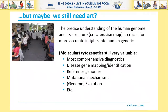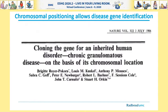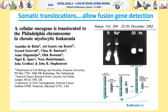Molecular cytogenetics is still extremely valuable to get the most comprehensive diagnostics. It can also assist in disease gene identification, is important for complete reference genomes, and helps us understand mutation mechanisms or gives insights into evolution. The earliest gene identification studies made use of cytogenetic techniques — for example, germline mutations that cause CGD, or somatic cytogenetic aberrations like the identification of the Philadelphia chromosome, which led to the identification of the BCR-ABL fusion gene, which had enormous impact on personalized treatment of CML.